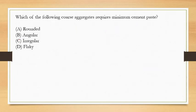Next question: which of the following coarse aggregates requires minimum cement paste? This question is about the workability of concrete. Workability is the property of concrete which describes the ease with which we can work with the concrete - how easy it is to mix, place, and finish.